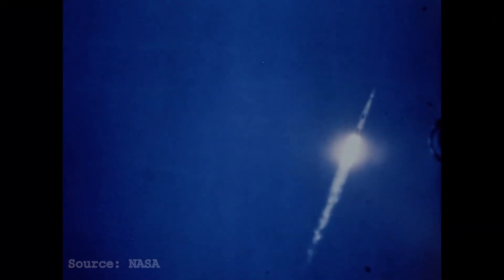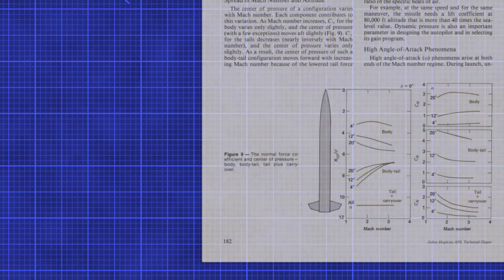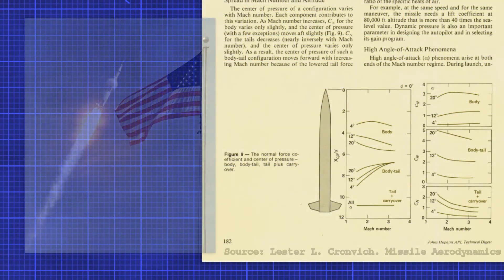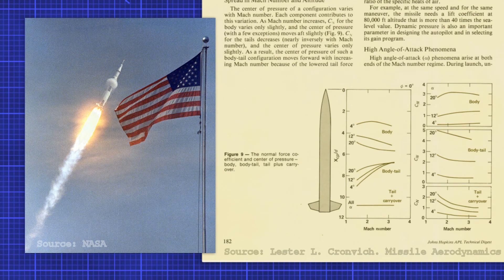For example, if the rocket is at a great angle to the airflow, the center of pressure generally moves forward. The center of pressure also shifts dramatically when breaking the sound barrier and then usually gradually moves forward with increasing Mach number.